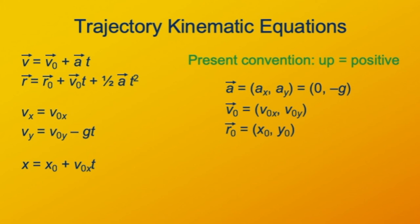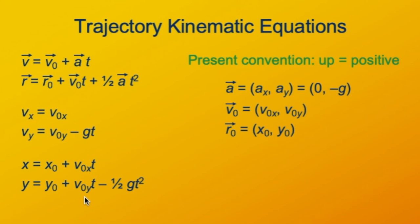For position in the horizontal x direction, we just have the constant velocity equation: position equals the initial position plus the initial x velocity — which is the constant x velocity — times time. Position in the vertical direction is a constant acceleration situation: it equals the initial vertical component of position plus the initial vertical component of velocity times time, plus the contribution of the acceleration due to gravity, which is minus g, giving us minus one-half g times t squared. These are all the equations you need to fully characterize ballistic motion without air resistance.